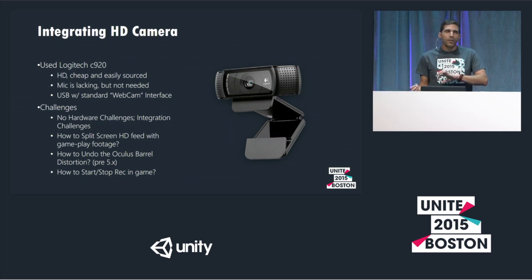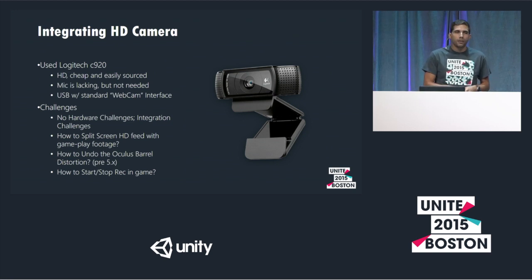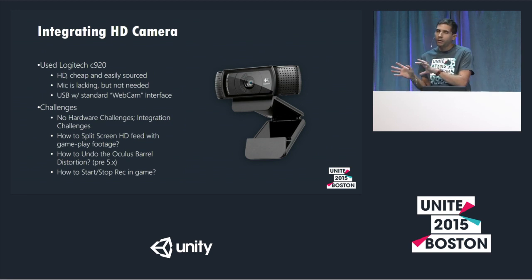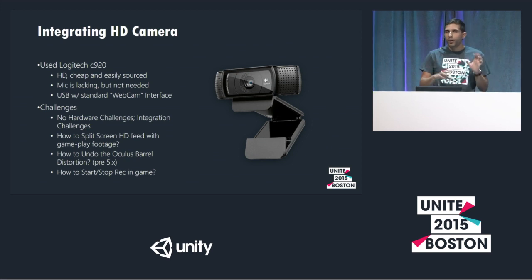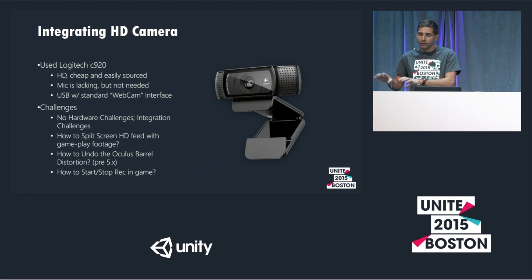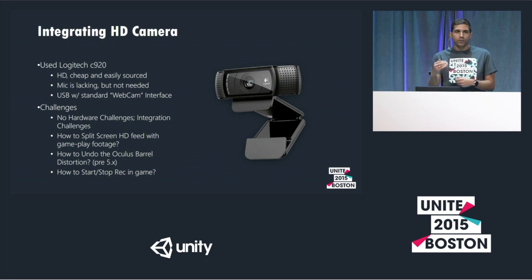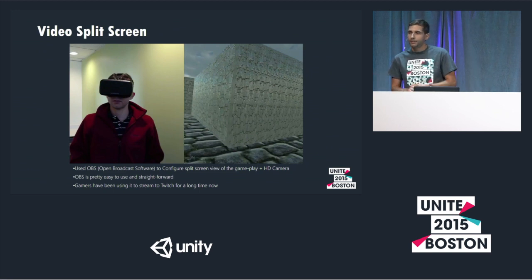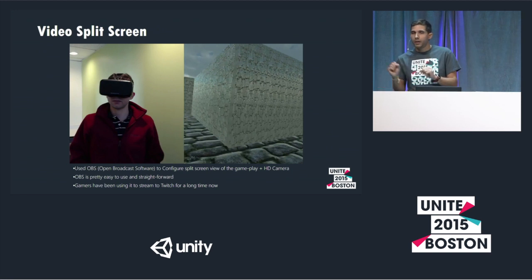For the HD camera, we picked a specific model because we could find it at pretty much any Best Buy, so replacing it if it broke was easy. The challenges were: getting the split screen, undoing the barrel distortion (this was pre-Unity 5 so we had to do that ourselves), and starting and stopping recording within the game. We used OBS — it's spectacular and game streamers have been using it for a long time. There's a plugin for OBS that allows us to start and stop remotely.